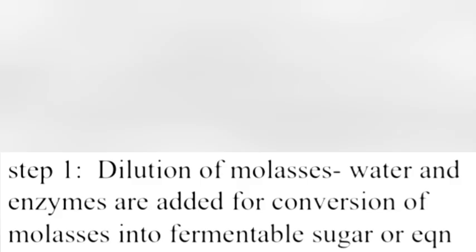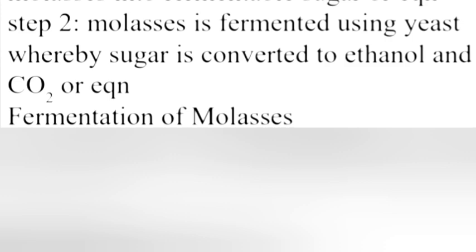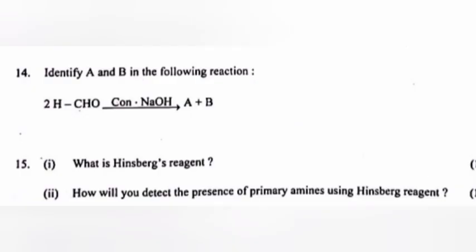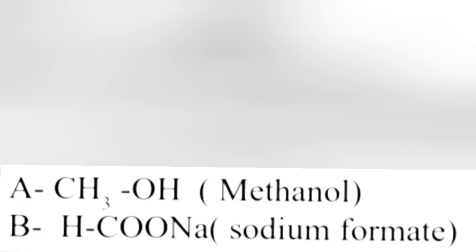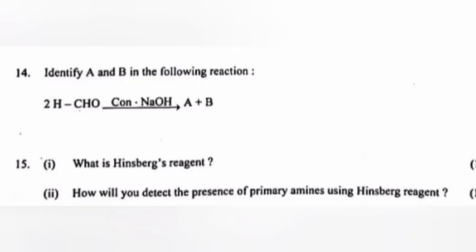Question 13: Explain the industrial preparation of ethanol from molasses. Answer: Step 1 — Dilution: water and enzymes are added for conversion of molasses into fermentable sugar. Step 2 — Fermentation: molasses is fermented using yeast whereby sugar is converted to ethanol and CO₂. Question 14: Identify A and B in the following reaction — answer: A = CH₃OH, B = HCOONa.